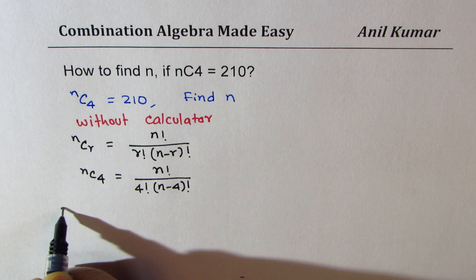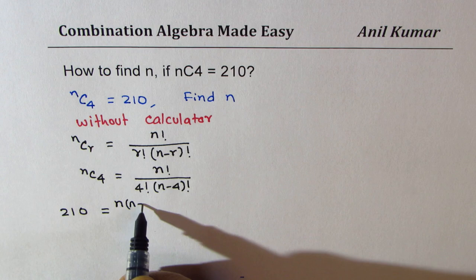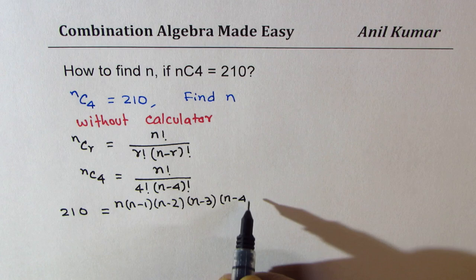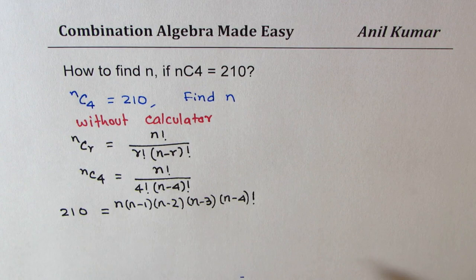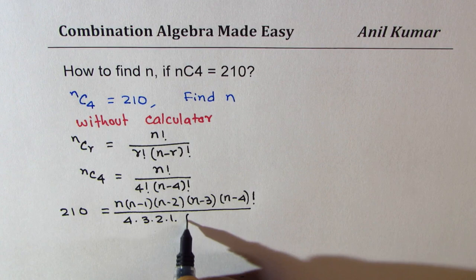Now what is n factorial? n factorial means n times n minus 1 times n minus 2 times n minus 3 times n minus 4. Since we have n minus 4 factorial in the denominator, we can stop right there. And in the denominator we have 4 factorial which is basically 4 times 3 times 2 times 1 times n minus 4 factorial.